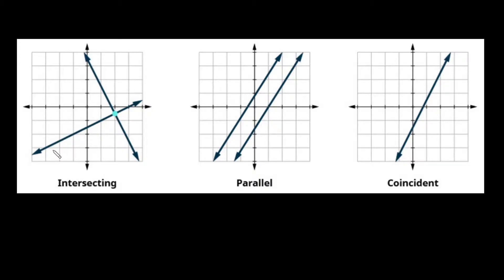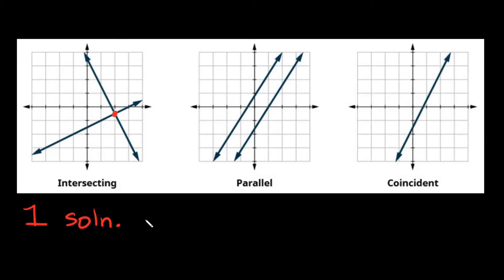Intersecting lines is literally just what it sounds like — it's when two lines that you graph intersect at a single point. Since these two lines intersect at just a single point, they only touch at one point. We say that intersecting lines have one solution.